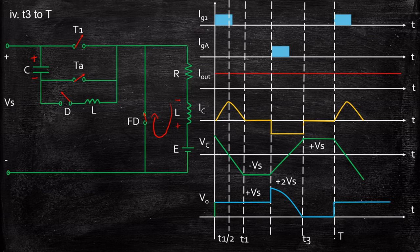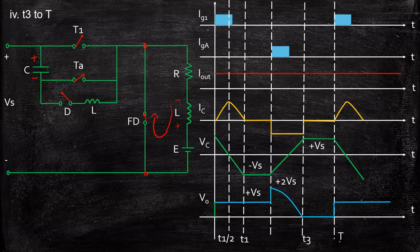The output voltage from T3 to T is equal to zero because the freewheeling diode acts as a short circuit across the load, and current flows through the least resistance path — so the output voltage across the load is zero. In the next cycle, when a gate pulse is again given to thyristor T1, the entire waveform pattern repeats.